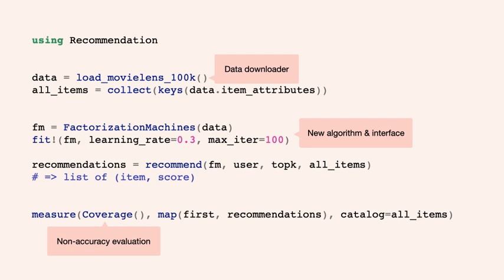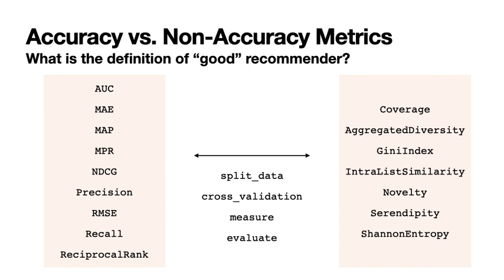The latest usage of the package looks like this: you can get data through the dedicated data downloader, easily build a recommendation algorithm — in this example, a factorization machines-based recommender — and by calling the measures function, capture both accuracy and non-accuracy metrics of the recommendation result. There is always a trade-off between accuracy and non-accuracy metrics, and recommendation.jl provides a wide variety of both, so you can optimize your recommendation based on your own definition of a good recommendation.